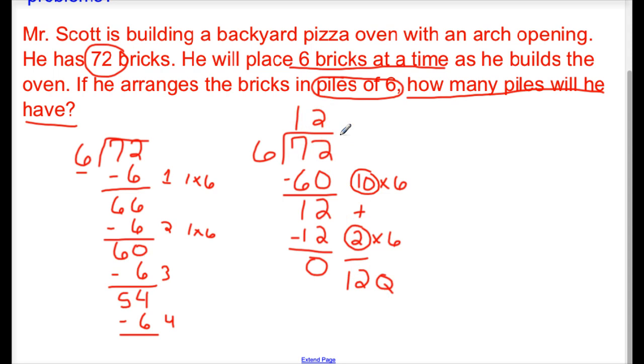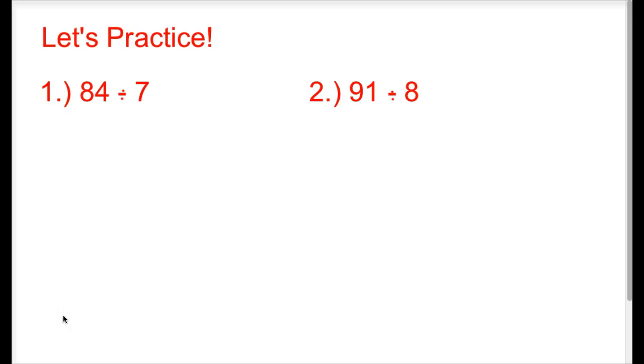We'll practice this a little more. Let's look at this example. 84 divided by 7. Now, we know that we can represent 84 divided by 7 like this as well. These two representations mean the same thing.